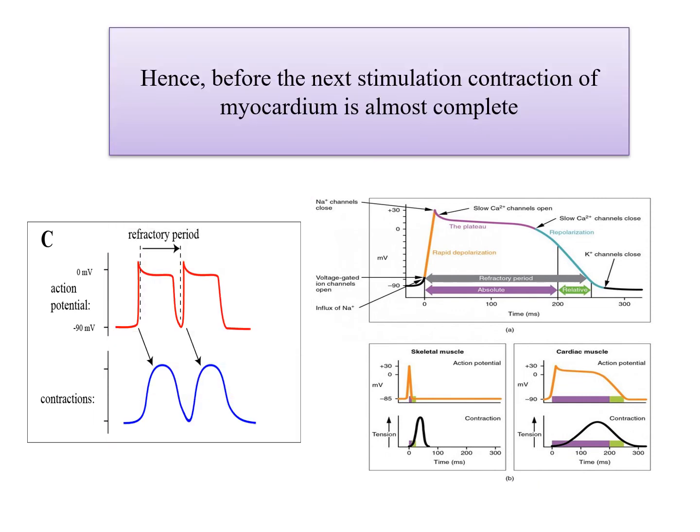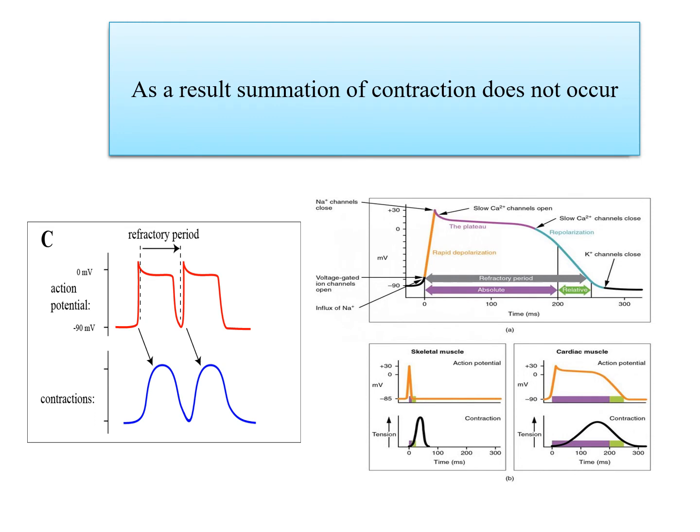As a result of this, summation of contraction that normally happens in skeletal muscle doesn't occur in the case of cardiac muscle. And this absence of summation is actually a life-serving mechanism.